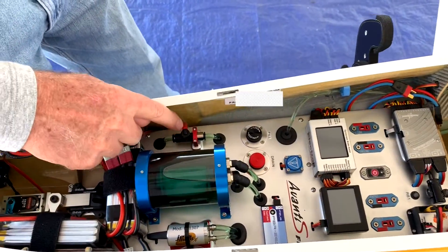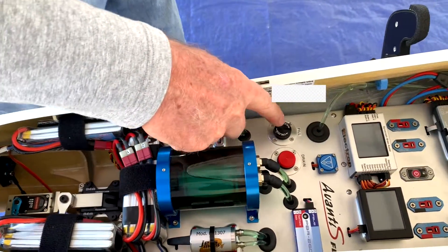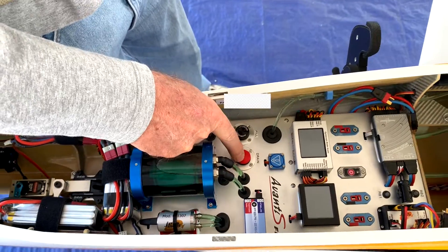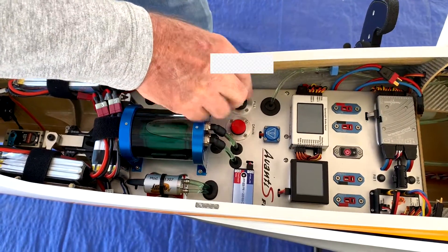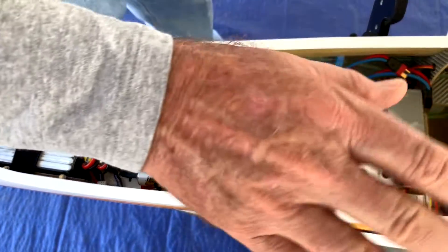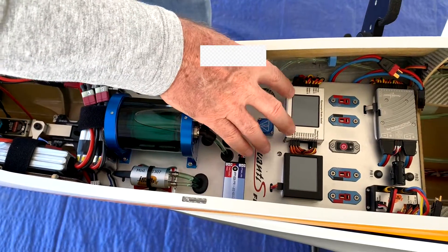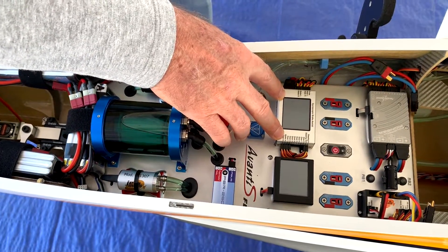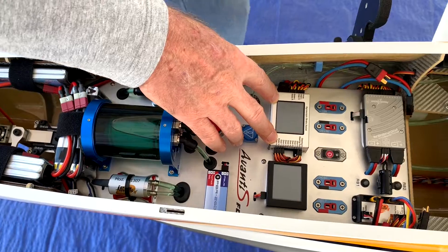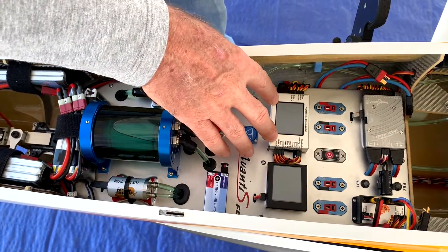This is a shutoff valve, that's for filling and draining the fuel. That's a gyro to help stabilize the controls. This is a unit that controls the retracts, landing gear, and sequences the gear door, and has the brake system on it as well for braking.